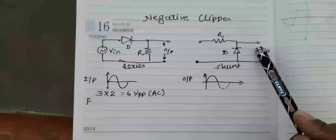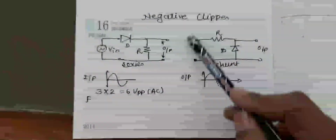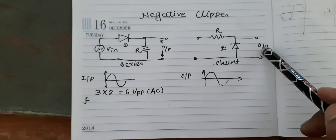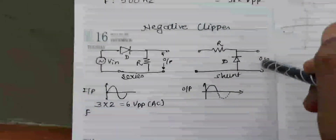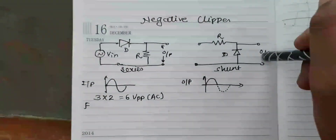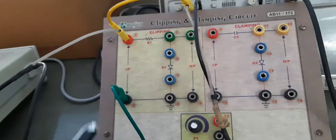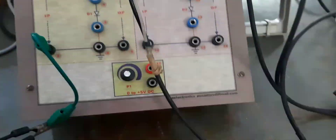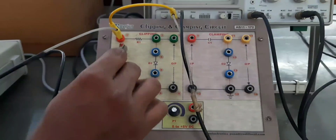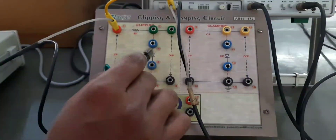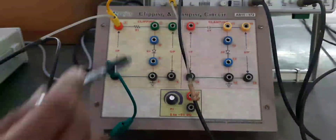In the lab, we have a kit of the shunt negative clipper. I will now show you the input, the output, and how to assemble the circuit. Here is the circuit; we have to give the inputs and make the arrangement as per our circuit diagrams.